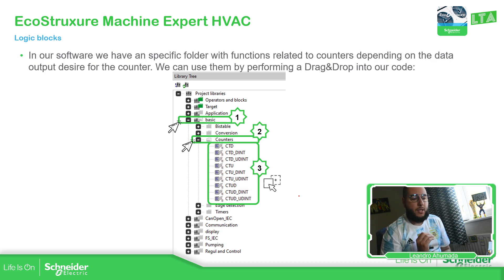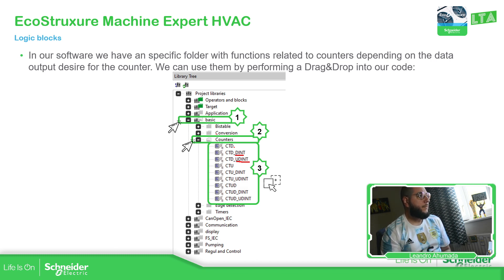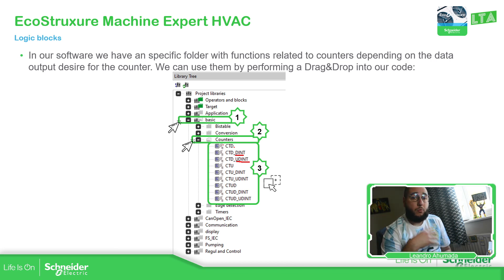Depending on the value that we want for the counter, we have different options — for double int or unsigned double ints. And I believe this one is only for ints, but we can see that on the software. In the previous version it wasn't here in basic, so don't forget about it. We just go to library tree, inside basic counters, and drag and drop into our code to use them.